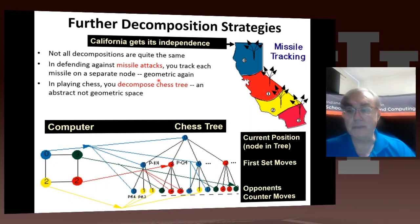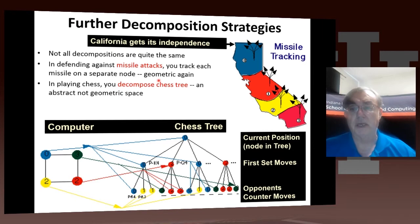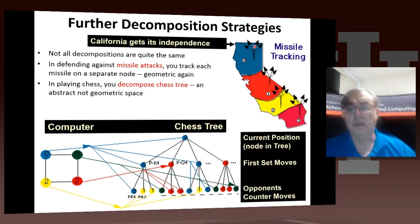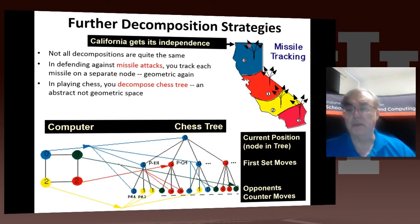Here are some examples from a long time ago. We have California with four missile sites, and the missiles were launched from those sites. You were in charge of tracking those missiles and shooting them down. In your tracking algorithm, to get good performance and track them efficiently, you would use parallel computing, chopping the problem up into parts, with one core handling these four missiles and another core handling those four, and so on.